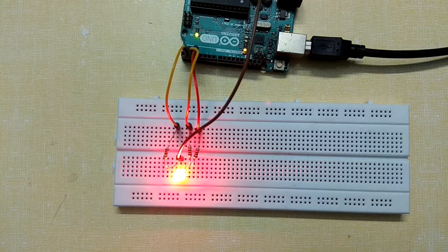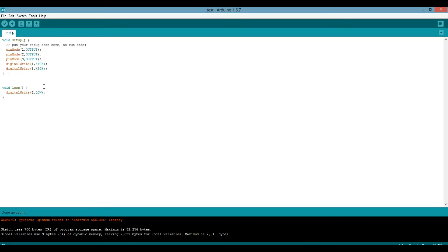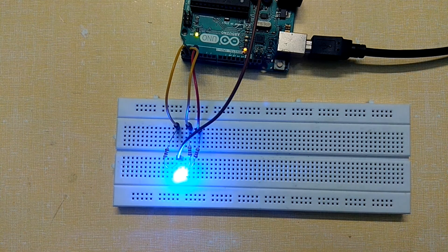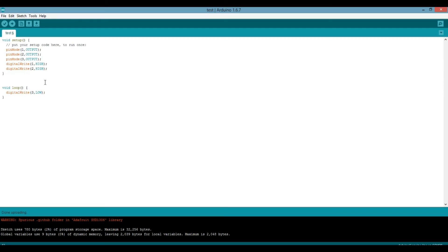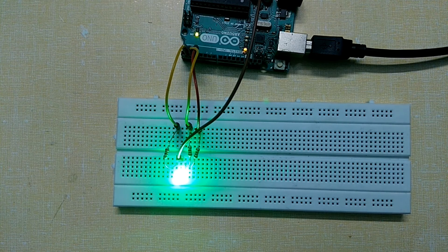Making the first pin low gives red color. And the second pin low will turn it into blue. And the third pin will result in green color.